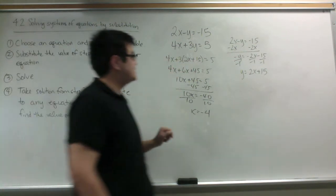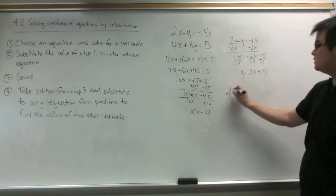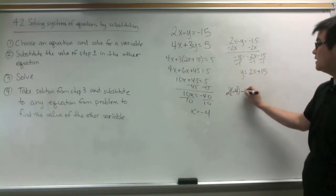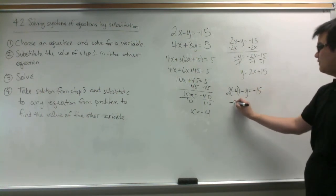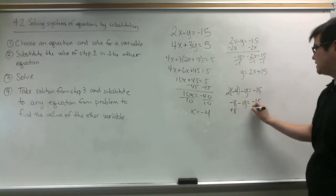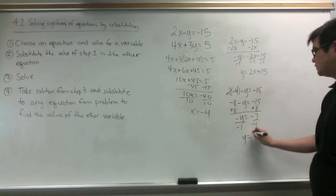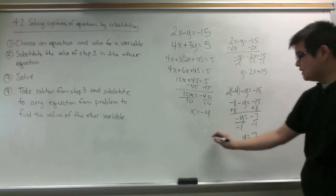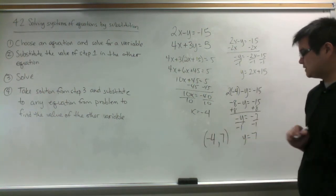I'm going to take x equals negative 4 and substitute it into the top equation. So 2 times negative 4 minus y equals negative 15. Negative 8 minus y equals negative 15. Add 8 on both sides — negative y equals negative 7. Divide both sides by negative 1 — y equals 7. So the solution to the system is (-4, 7).